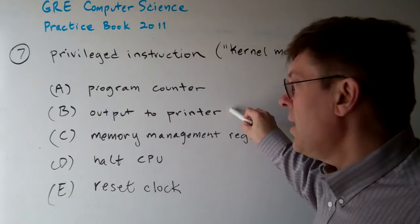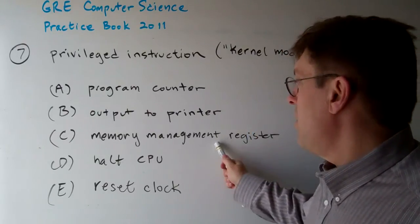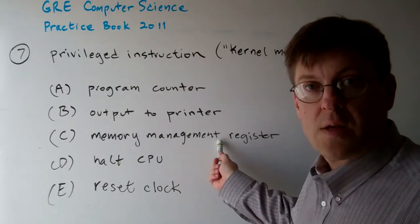Output to the printer, B, is going to access the printer. It's hardware. The memory management register, C, is going to be memory hardware.